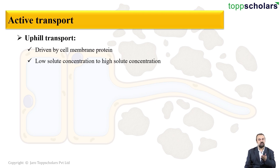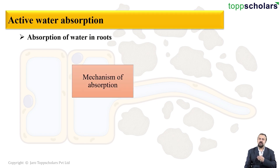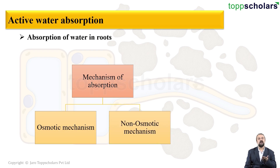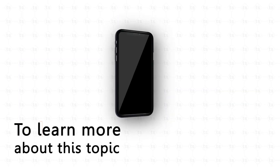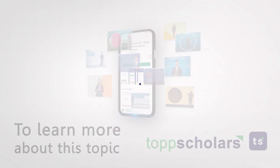Movement from low solute concentration to high solute concentration is why it is called active transport. Now we will study the absorption of water in the roots. The mechanism of absorption occurs by two methods: osmotic mechanism and non-osmotic mechanism.